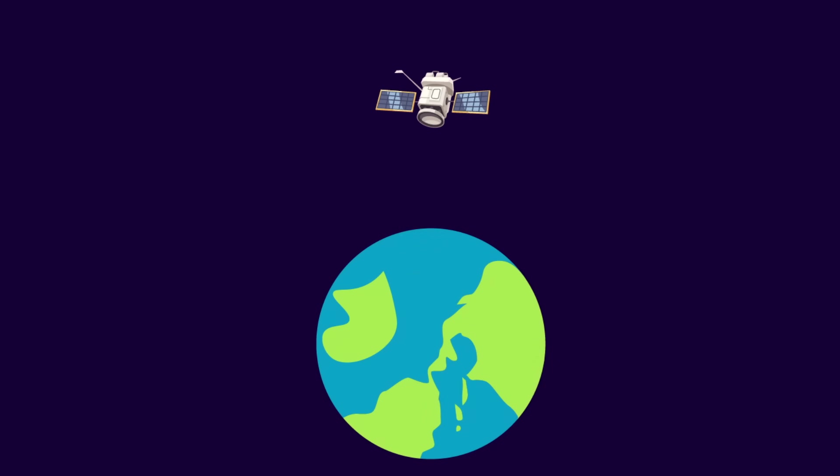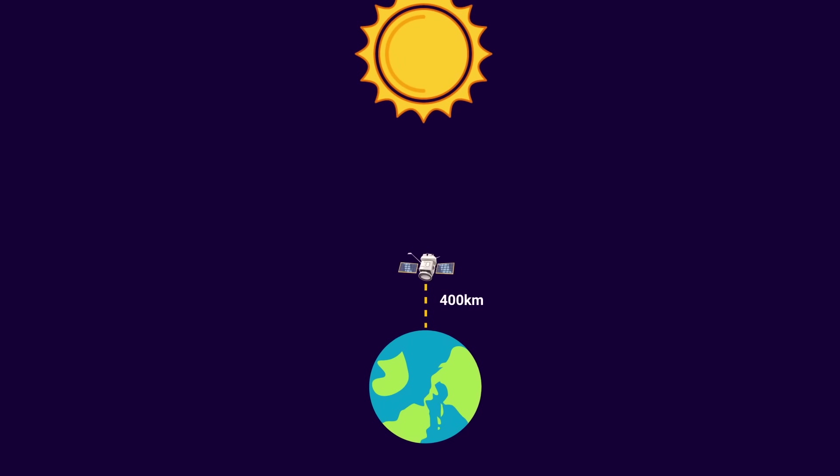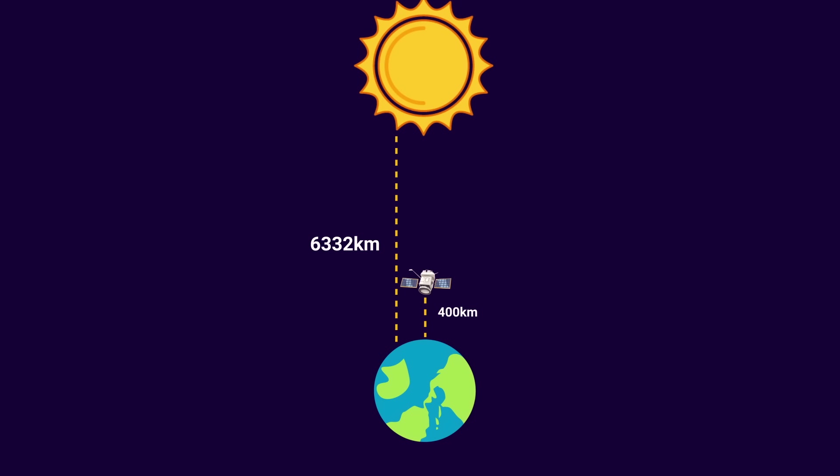For reference, the International Space Station is just over 400 kilometers away. So the Sun would be about 15 times further than that in the flat Earth model. And that is a problem. Let's see why.